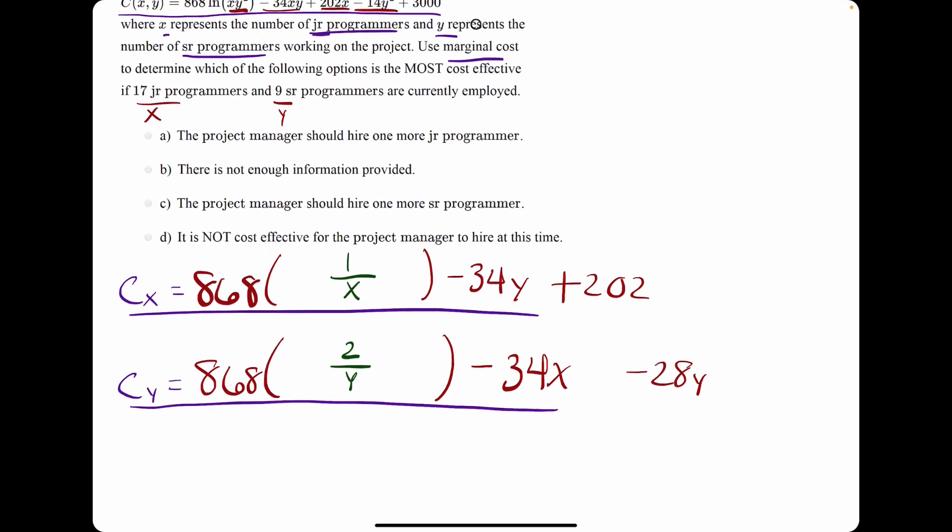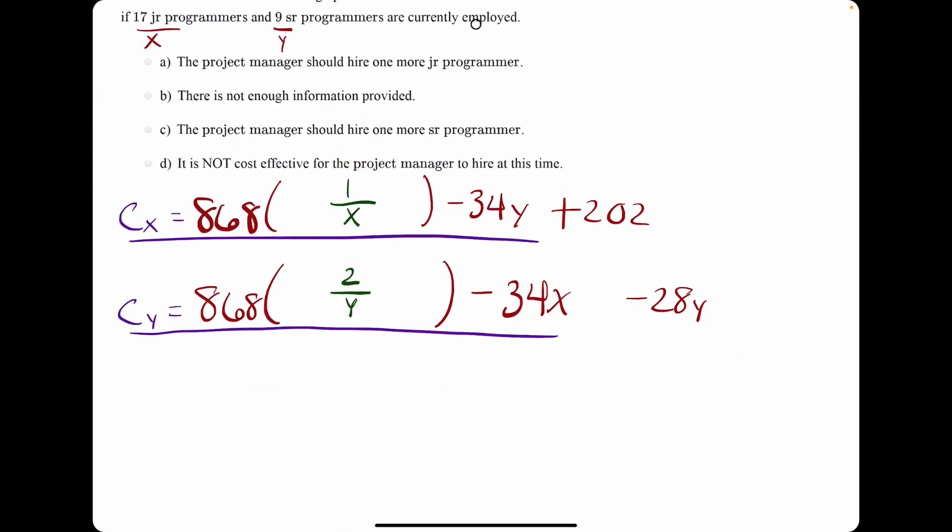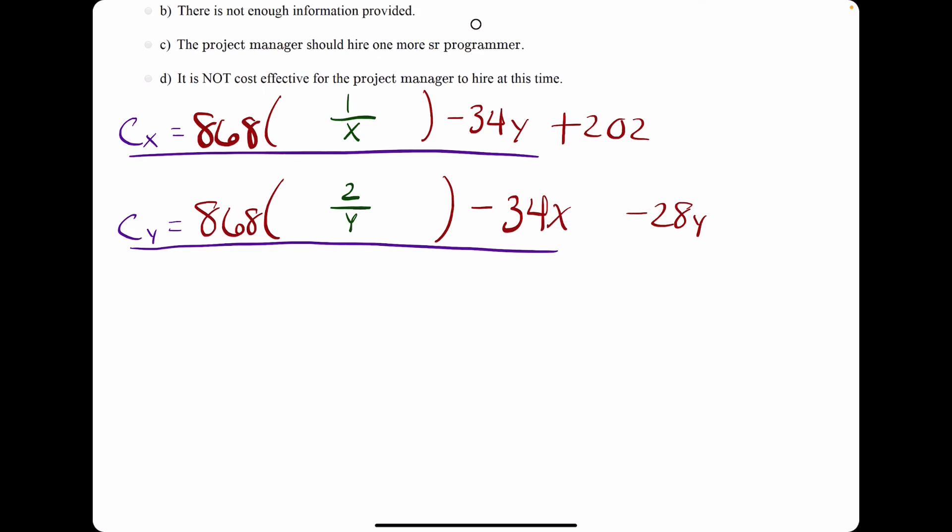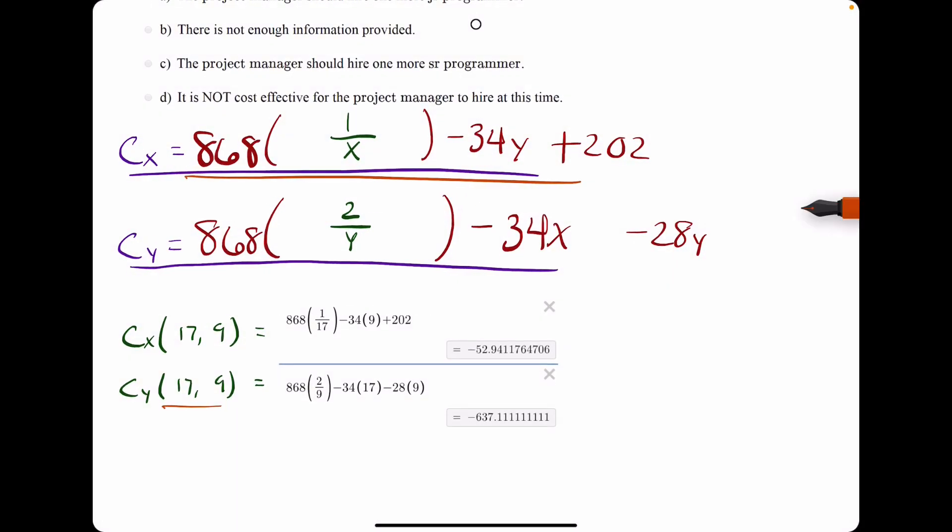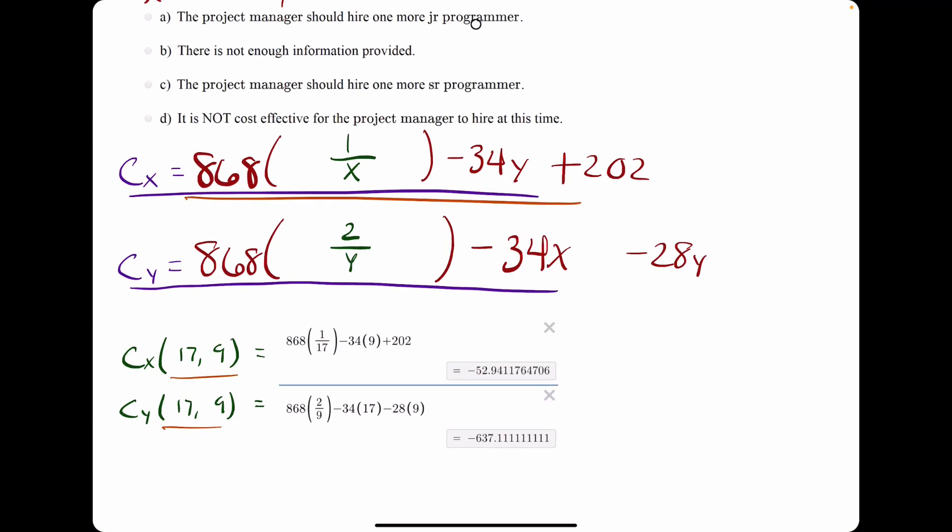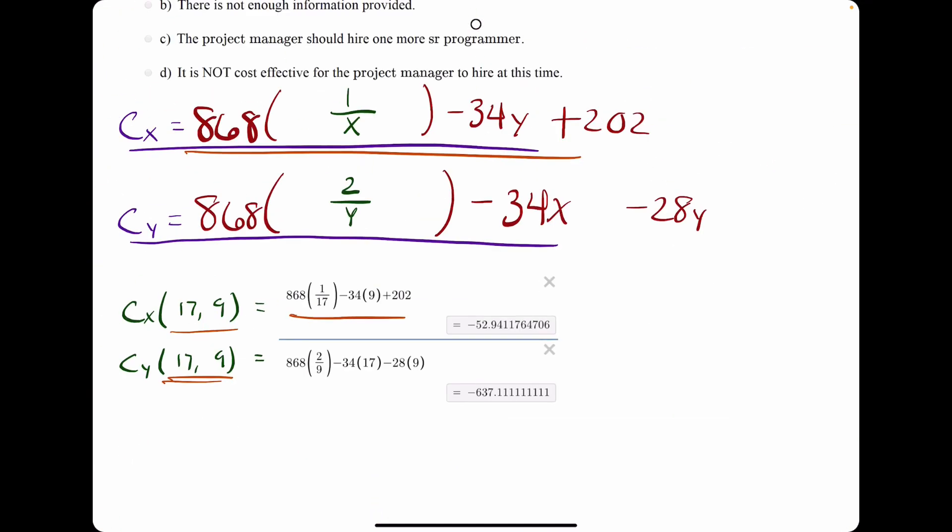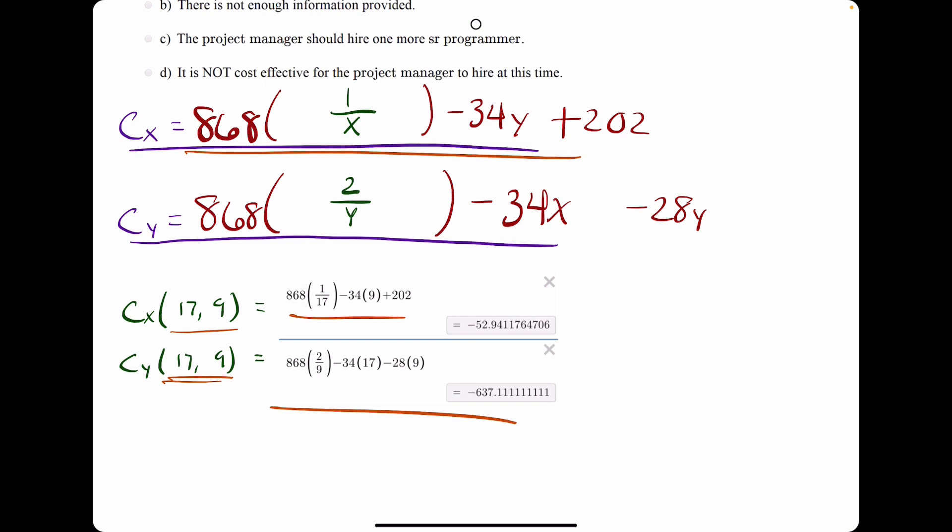Now what I'm going to do is plug in 17 for x, 9 for y into both of these, and then I'll come back with the answers. Alright. Now we have our Cx value with x equals 17 and 9 equals y plugged into Cx here, and then 17 and 9 plugged into Cy here. Let's analyze these values real quick.